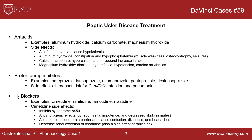Calcium carbonate: taking too much can cause hypercalcemia and a rebound increase in acid. Magnesium hydroxide: magnesium can cause diarrhea, hyporeflexia, hypotension, and even cardiac arrhythmias if taken in excess. For proton pump inhibitors, examples include omeprazole, lansoprazole, esomeprazole, pantoprazole, and dexlansoprazole — they all end in '-prazole,' which is the cue that it's a proton pump inhibitor. The main side effects to remember are increased risk for C. diff infection and pneumonia.